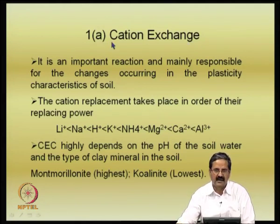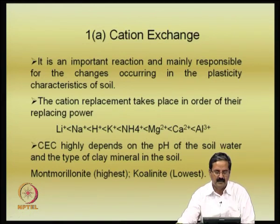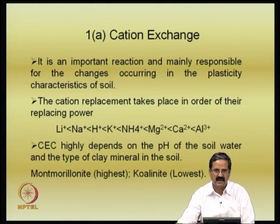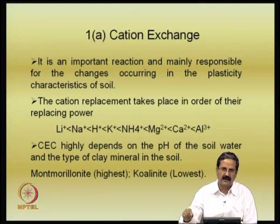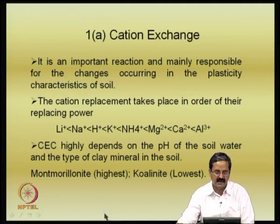Clays have negatively charged surfaces, and when you add some material like lime, there is a replacement of ions. For example, a sodium ion gets replaced by a calcium ion. If you have a sodium bentonite and you add a lot of calcium, the sodium gets replaced and it becomes a calcium bentonite. This is what is called cation exchange capacity — a replacement of cations takes place on the clay surface in a specific order.